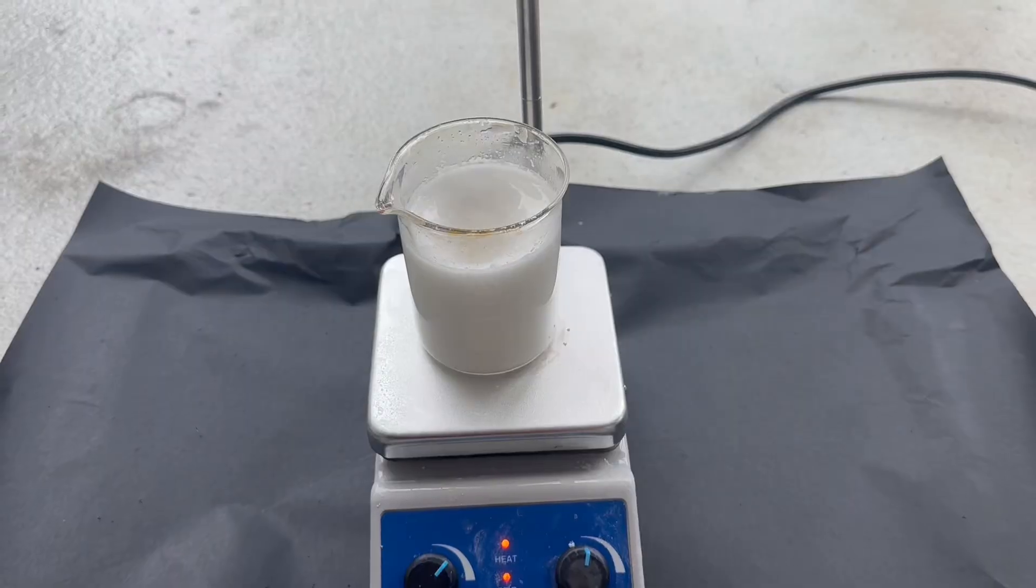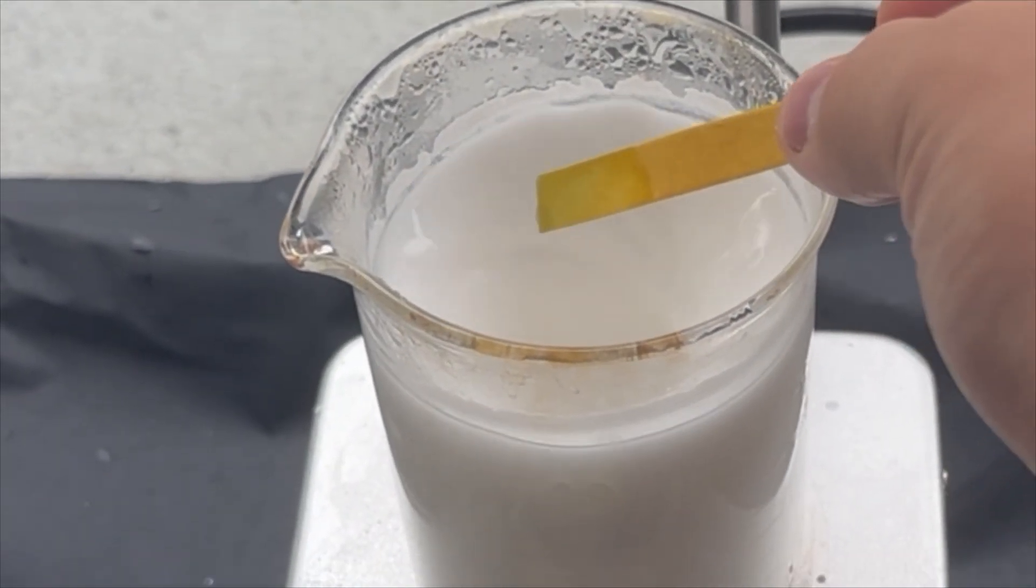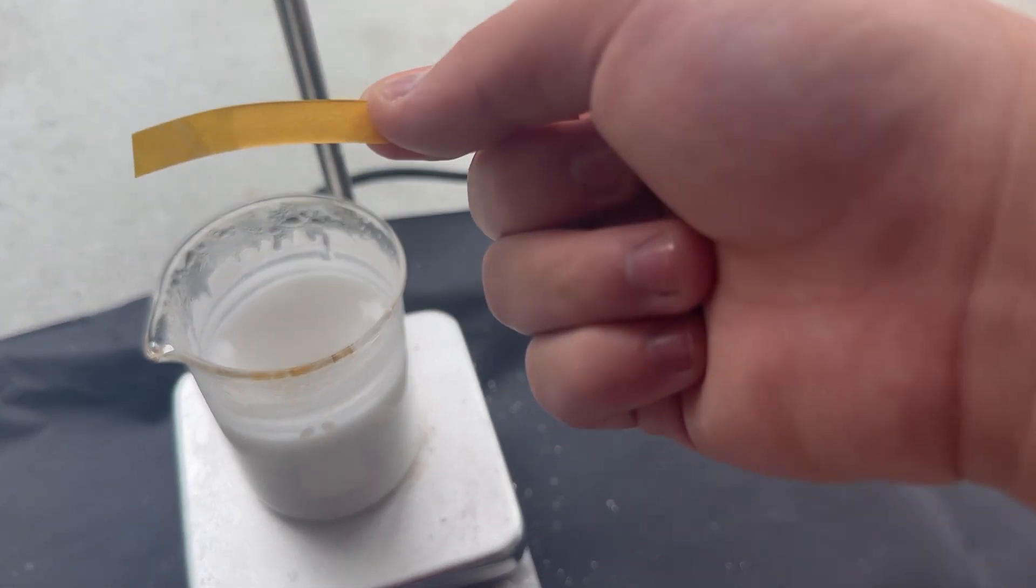The ammonia causes toxic fumes, so I do this outside. When I hold a pre-wetted pH paper above the solution, you can see it turned green from the basic ammonia. I stop heating it when the green barely registers.